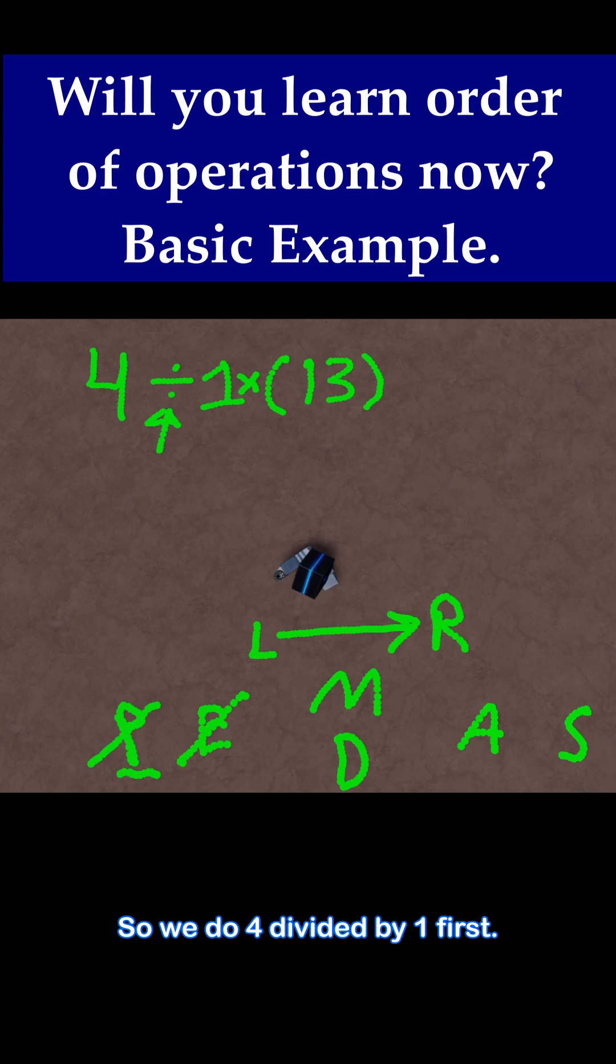So we do 4 divided by 1 first. We don't do 1 times 13 first. So that's what we're going to do.